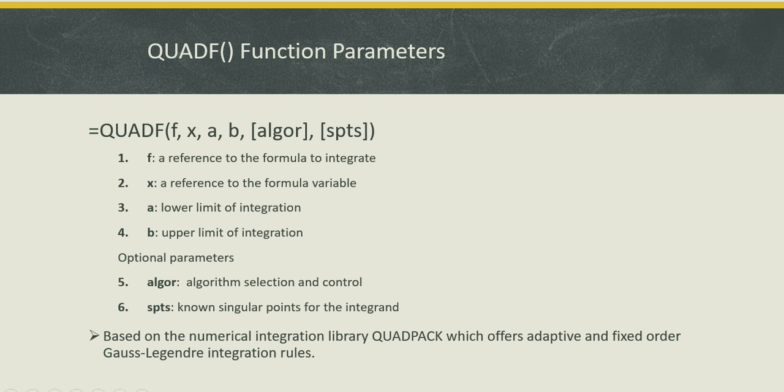Let's begin by describing the parameters for the integration function QuadF. QuadF requires four parameters: first is a reference to the formula to integrate, second is a reference to the formula variable of integration, third is the lower limit of integration which can be a number or a string for an infinite limit, and fourth is the upper limit of integration. There are two additional optional parameters: the fifth is algorithm control and the sixth parameter allows you to supply known singular points for the integrand. QuadF is based on the numerical integration library QuadPack which offers adaptive and fixed-order Gauss-Legendre integration rules.